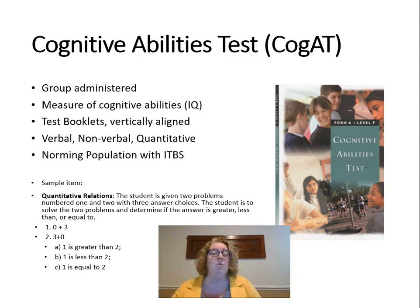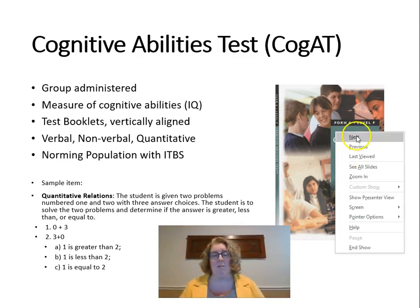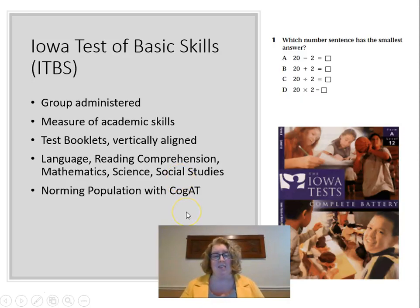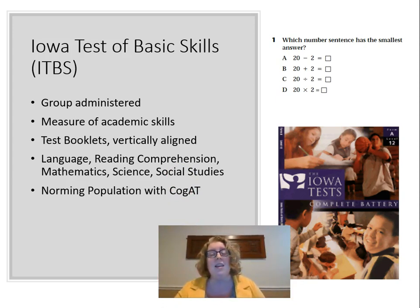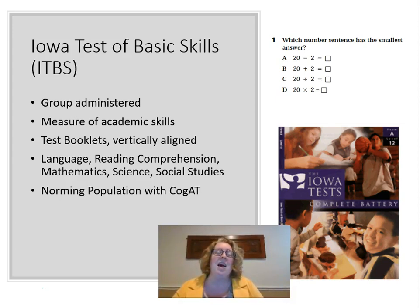An important feature of the CogAT is that it has the same norming population as the next test — the ITBS, or Iowa Test of Basic Skills. The ITBS is an achievement test. It's called the Iowa test not because it's related to the state of Iowa but because it was developed at the University of Iowa by the same group of researchers who developed the CogAT. So we have both an achievement test and an ability test that are norm-referenced.